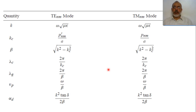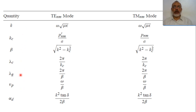We are going to summarize what we obtained for circular waveguides for both transverse electric and transverse magnetic modes. There are some quantities which are common for all types of waveguides, such as the propagation wavenumber of the material, which is omega times the square root of mu epsilon.